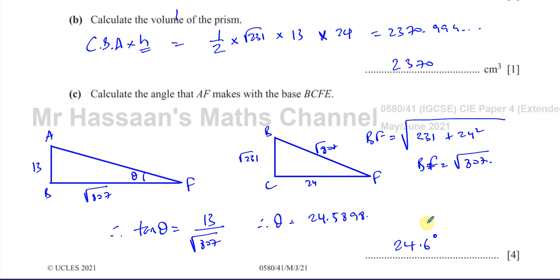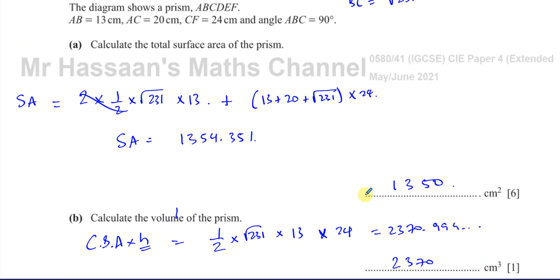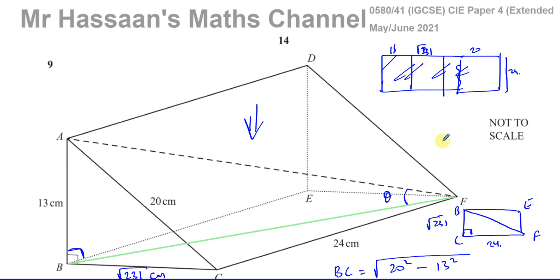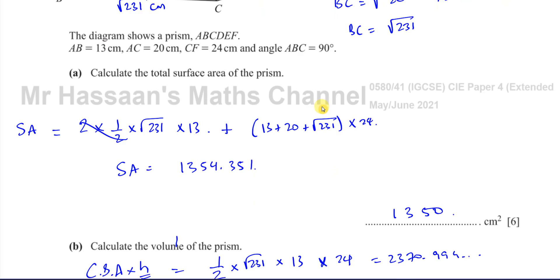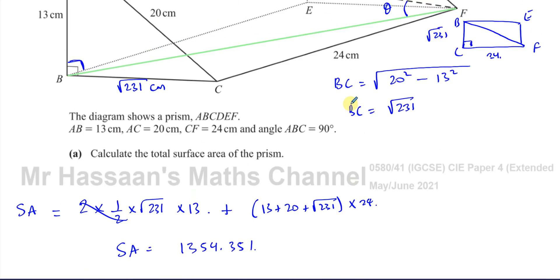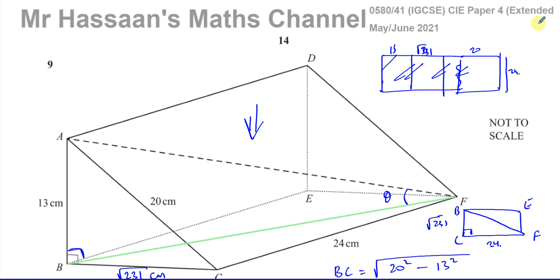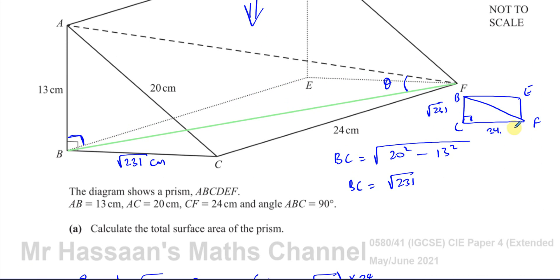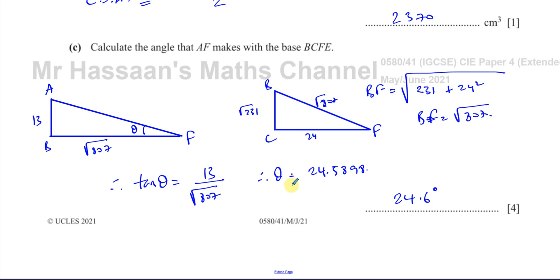And that completes this question, which is question number nine from this May, June, 2021, paper four, variant one, from Cambridge IGCSE. Thank you for watching. Other questions from this particular paper can be found in the playlist that will appear in this region over here. Other questions from the topic of mensuration areas and volumes can be found in the playlist over here. You can find also 3D trigonometry questions in this playlist. Thank you for watching and see you soon.